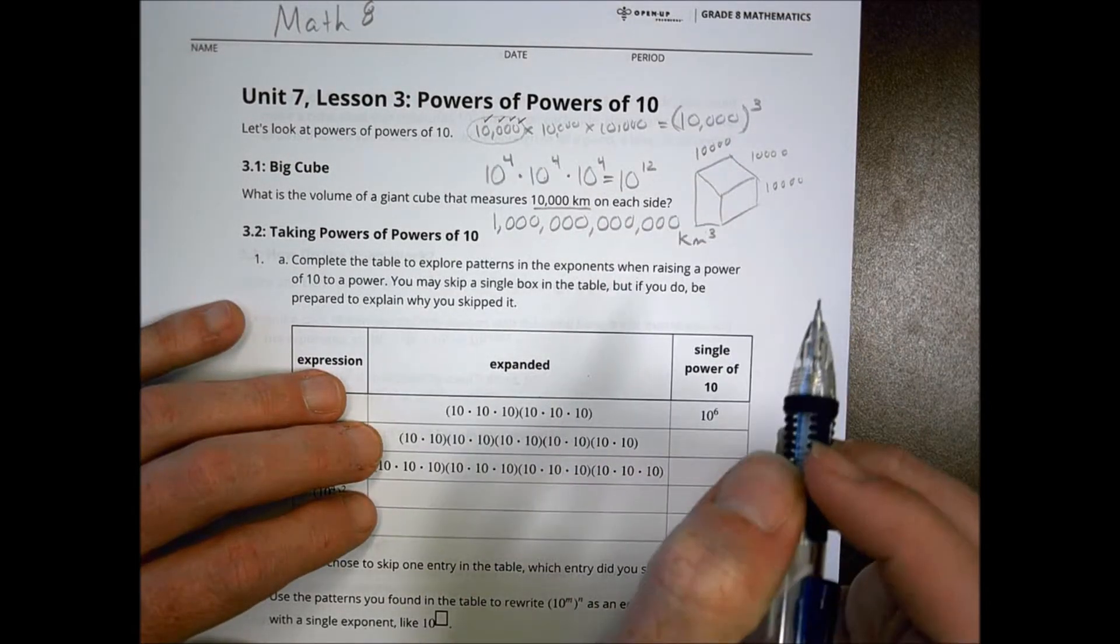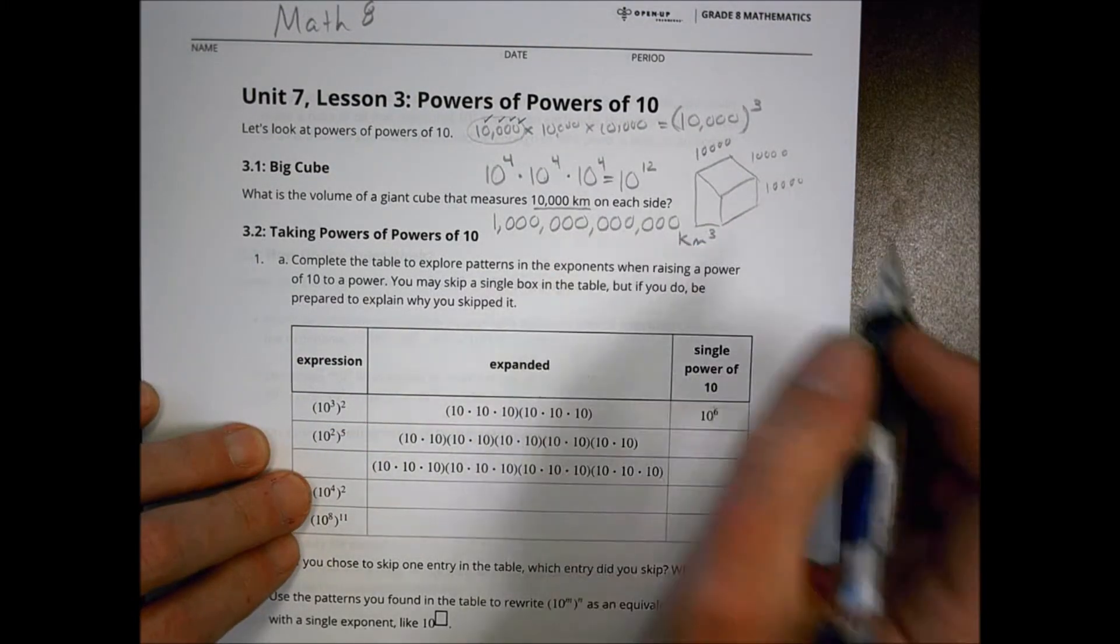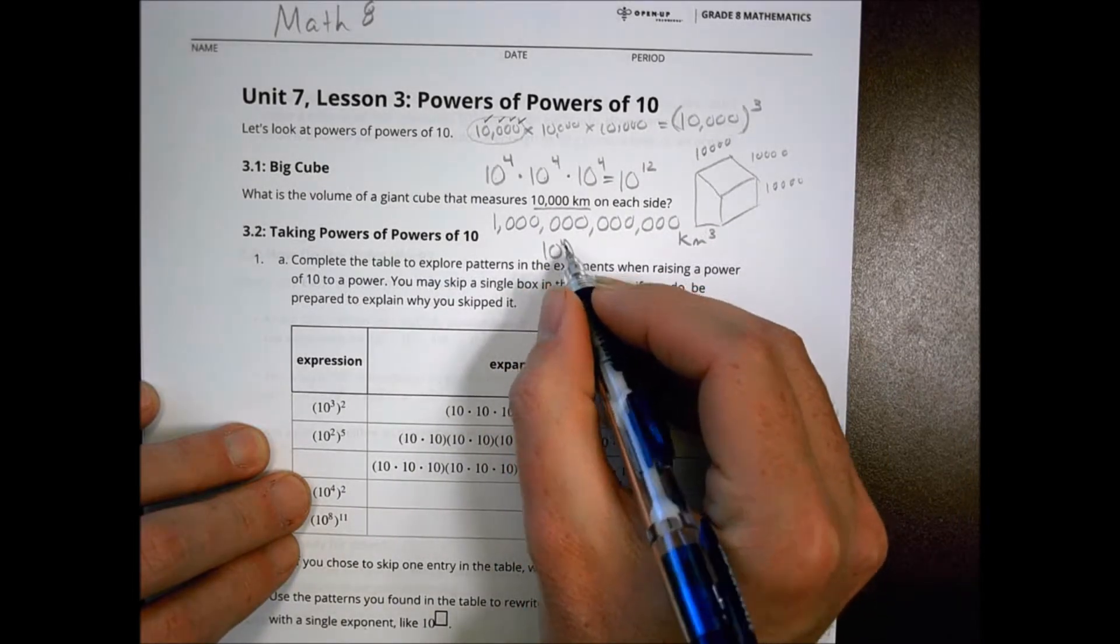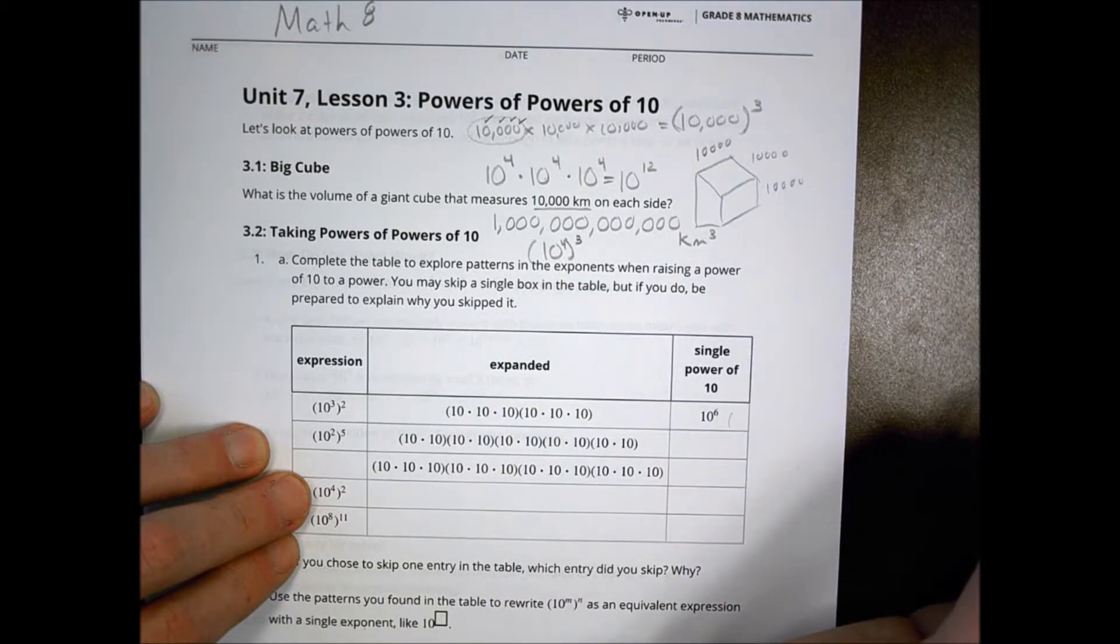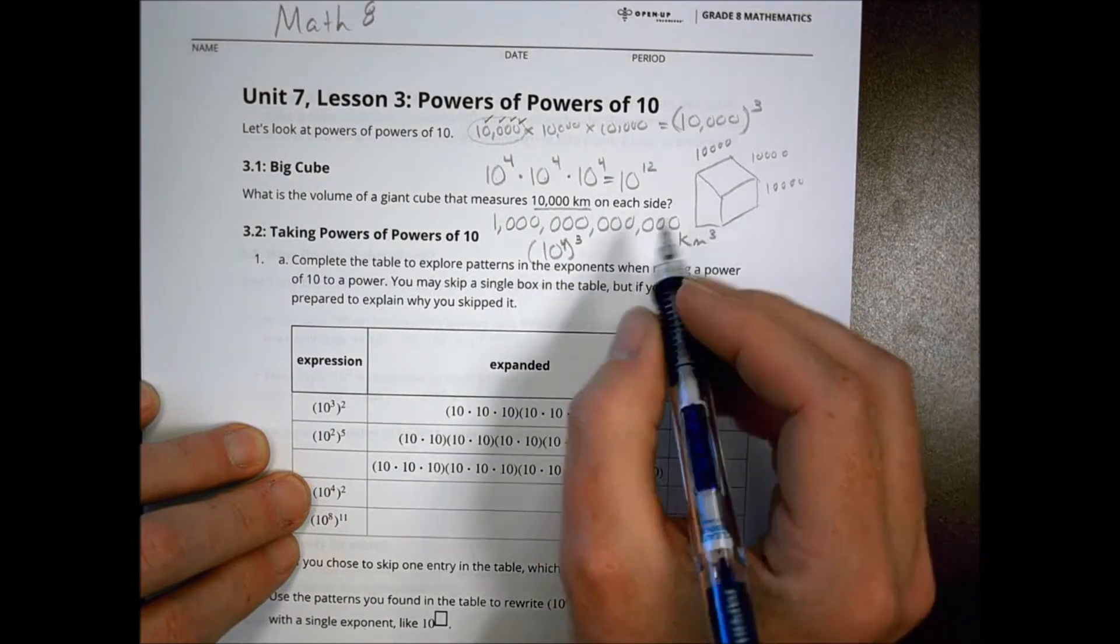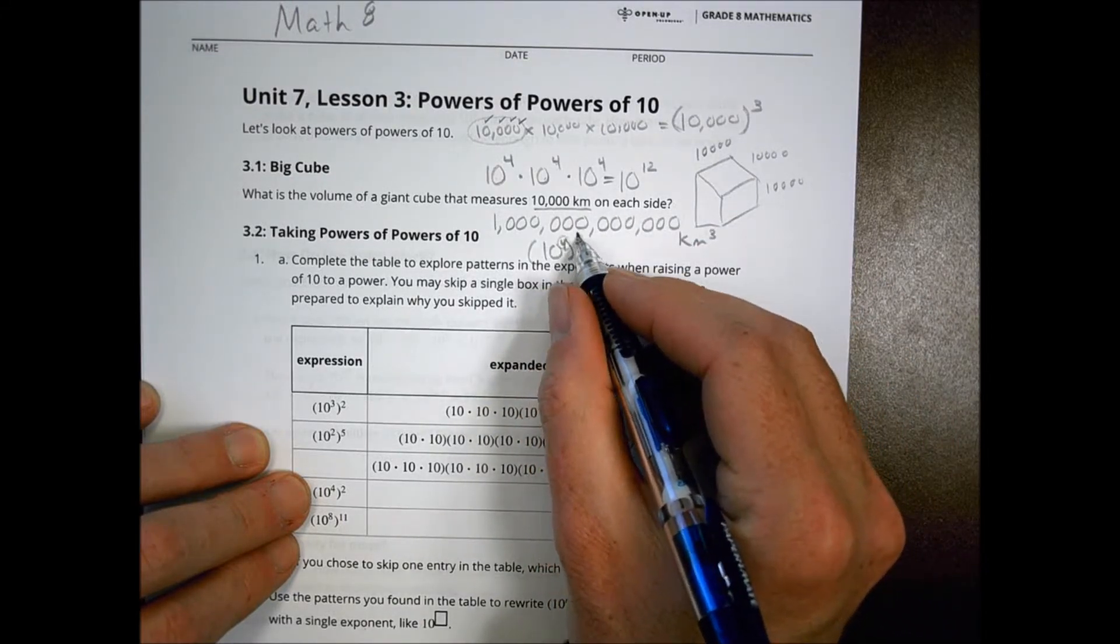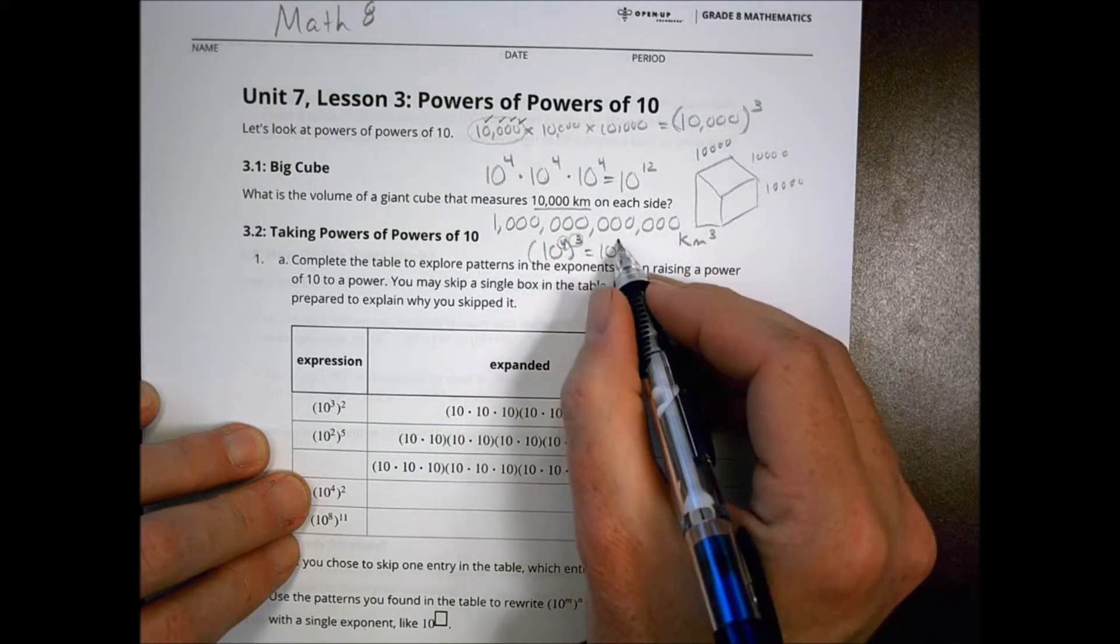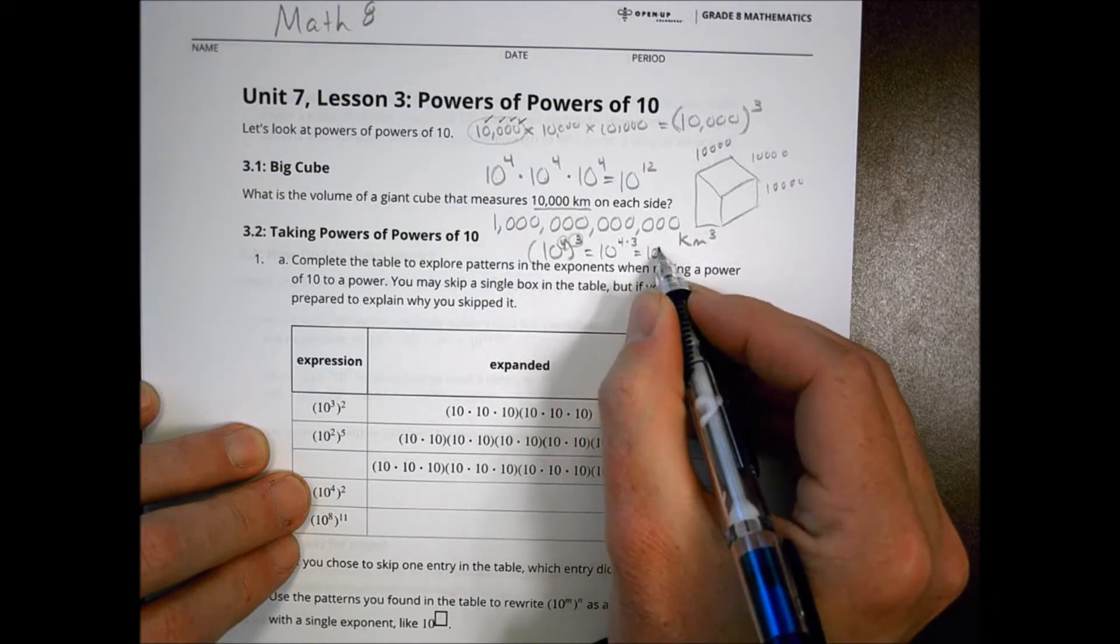But there's also an easier way to look at it. Think about this: This is doing 10 to the fourth power, but I'm doing that three times. So I'm actually doing 10 to the fourth three times. So what we notice is that if I have a power to another power, that becomes the same as 10 to the four times three power, which is 10 to the twelfth.